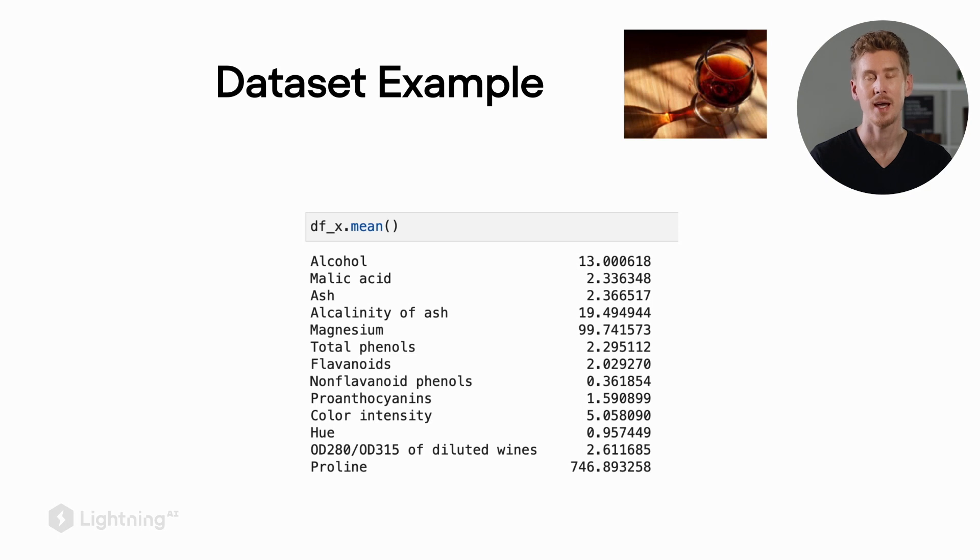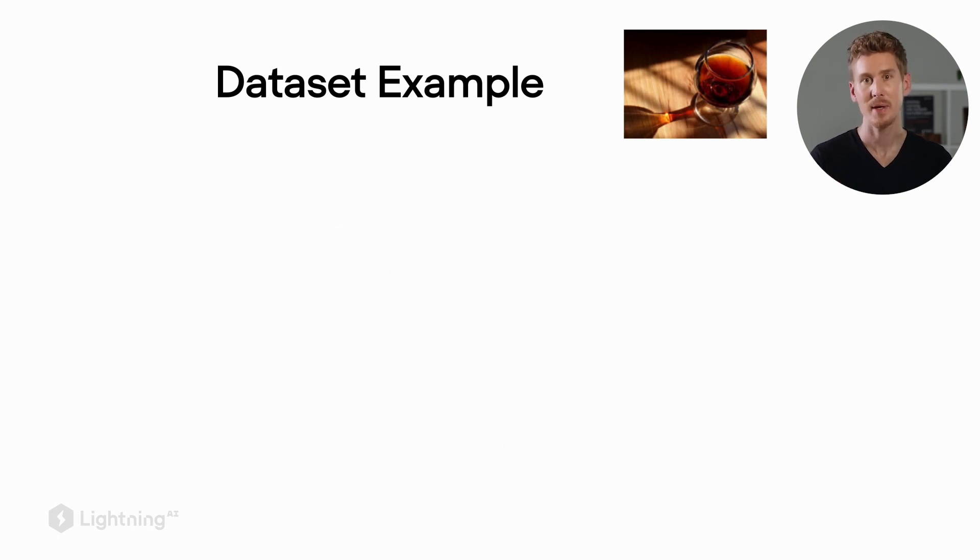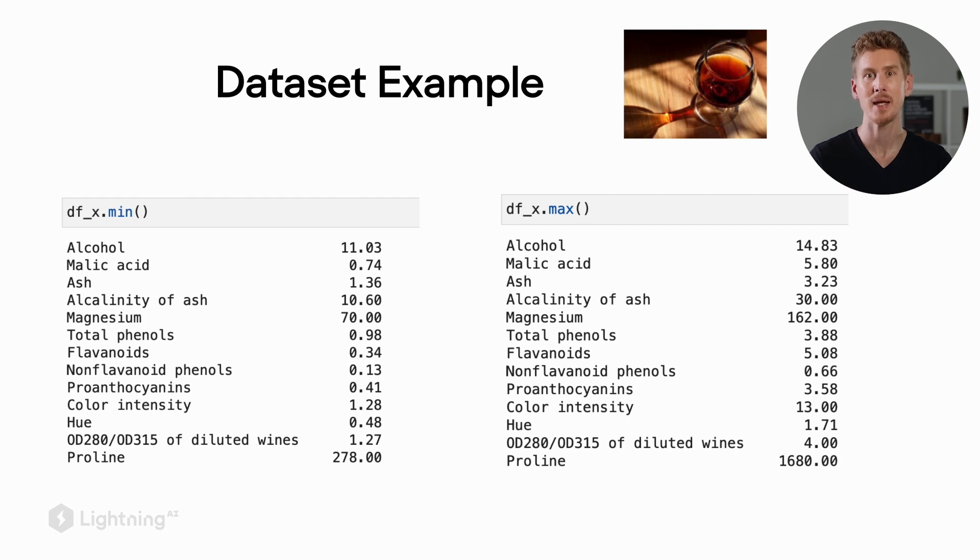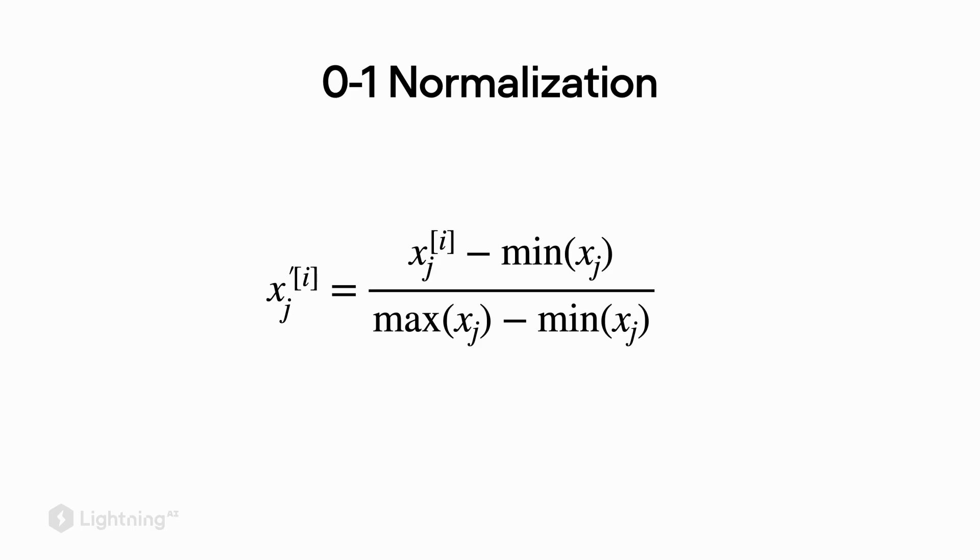Just to get an idea of the scales, let's take a look at the mean here - the average of each feature column. As we can see, the values range widely. Similarly, we can see that the minimum and maximum values of each feature column are wildly different.